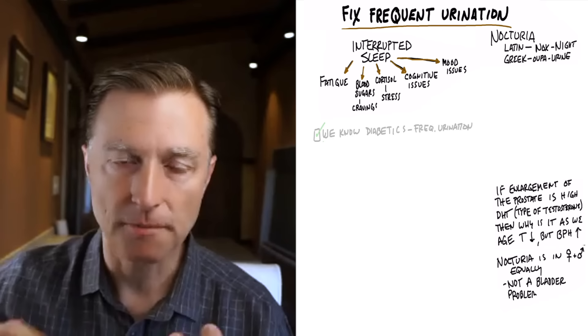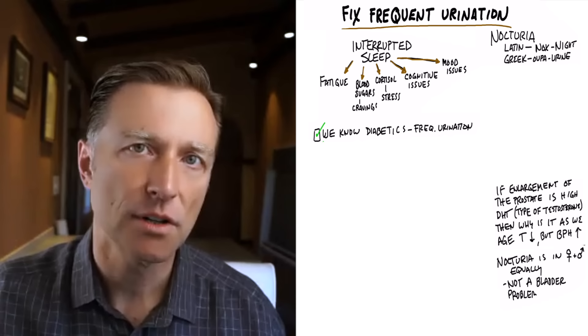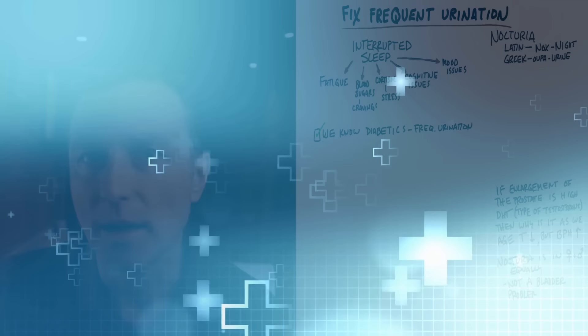Diabetics nearly always have problems with urinary frequency. What's the difference between a diabetic and someone who doesn't have diabetes? High levels of sugar and many times high levels of insulin, unless they are a diabetic type one. Here's the next clue.